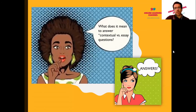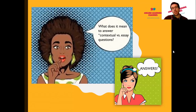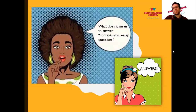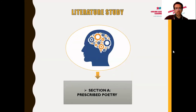What does it mean to answer contextual questions versus essay-type questions? When it comes to the essay question, one must elaborate quite extensively on critically discussing a particular point. With contextual questions, you receive up to four or five questions per poem that ask you to deconstruct specific aspects or sections of the poem, reinforcing the broader understanding and meaning behind the poem. It's a way of trying to understand from what perspective the actual poet is coming from.